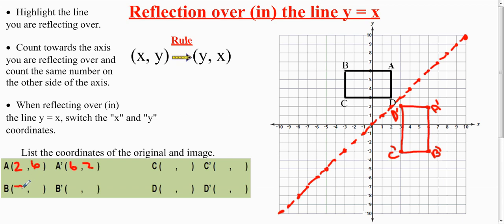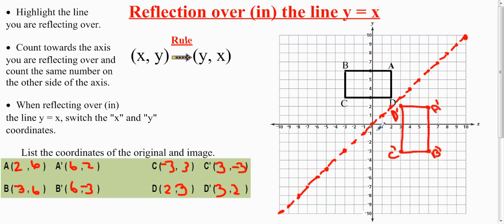The original B is (-3, 6), so B prime has to be (6, -3). Let's check B prime: six, negative three — correct. C the original is (-3, 3), so C prime has to be (3, -3) — and it is. D is (2, 3), so D prime has to be (3, 2) using the rule of switching coordinates — and D prime is (3, 2).